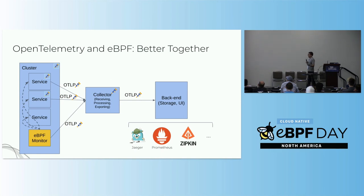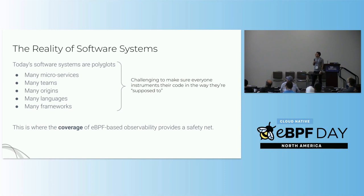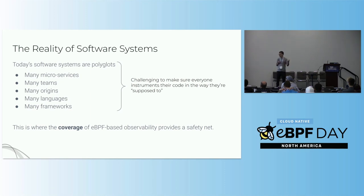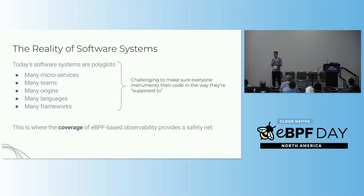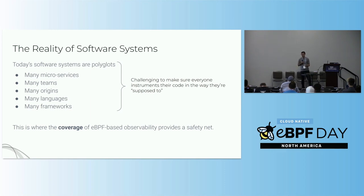Pixie, the project I work on, does something very much like this - we have eBPF data collection but allow data to be exported in OpenTelemetry format so you can hook into whatever system you want. The reality of software systems is that they're complicated: many different microservices, written in different languages by different people, from different origins - mergers, acquisitions, many different frameworks. It's really challenging to make sure everyone in your organization is following instrumentation rules. This is where eBPF, as a broad basic solution and safety net, is really important in any holistic observability solution.